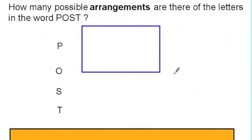You may of course have just used trial and error and come up with a list, but one systematic approach might be to use a tree diagram, so when you consider that the first letter could be P or O or S or T.